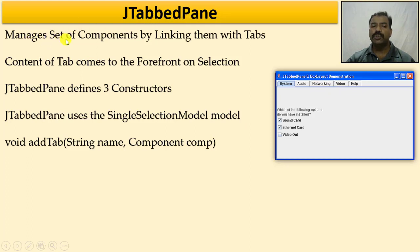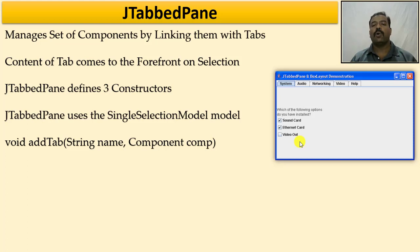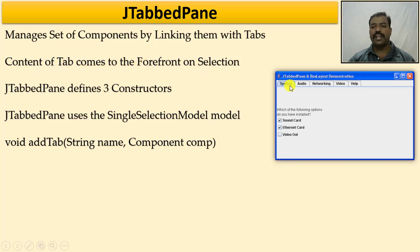JTabbedPane is used to manage a set of components by linking them with a particular tab. If I have hundreds of components, instead of dumping all those components on a single layer or pane, I create different tabs and put sets of components in each tab. The content of a tab comes to the forefront on selection — it is in the background until I click that tab, at which point its components come to the foreground.